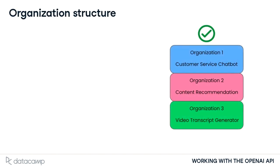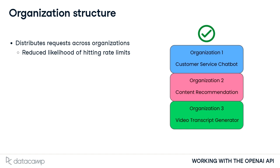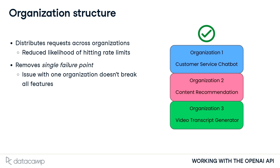In this example, we've created separate OpenAI organizations for three different AI-powered features: a customer service chatbot, a content recommendation system, and a video transcript generator. This distributes the requests to reduce the risk of hitting the rate limit. It also removes the single failure point, so an issue to one organization, such as a billing issue, will only result in the failure of a single feature. Product-separated organizations also provide more granular insights into usage and billing.